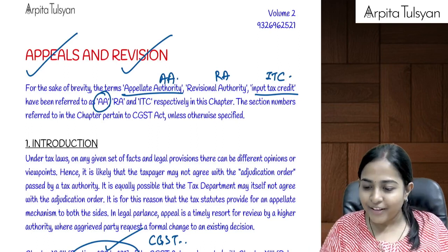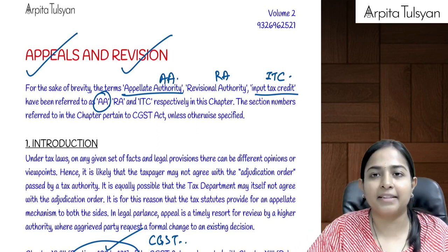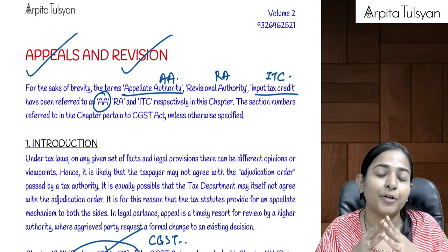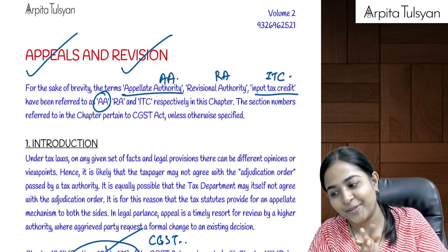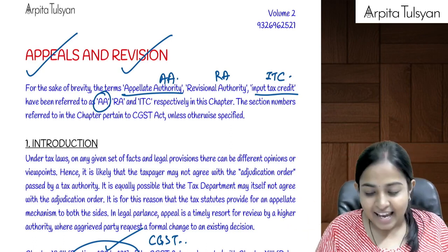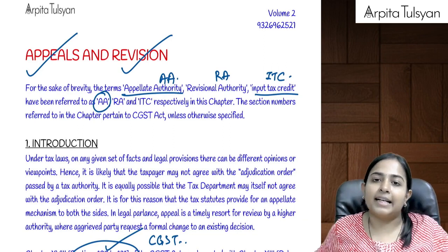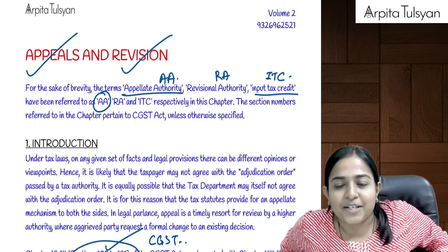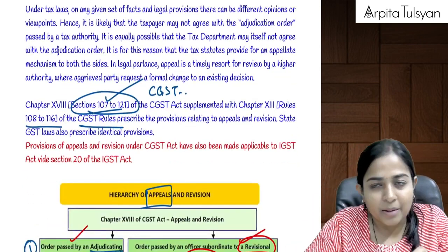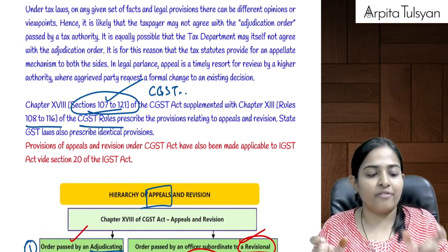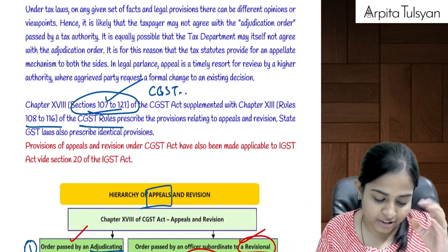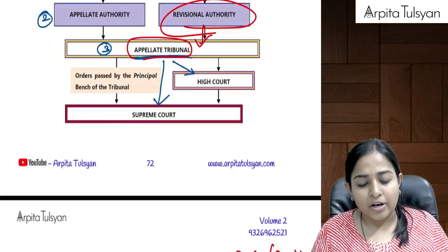Let's start with a super quick revision of the chapter on appeals and revision. Appeals and revisions are covered from section 107 to 121 of the CGST Act. Similar provisions have been made applicable for SGST and IGST as well.